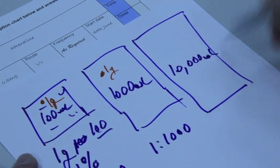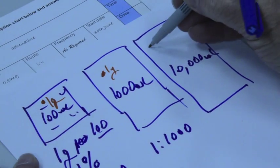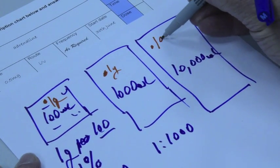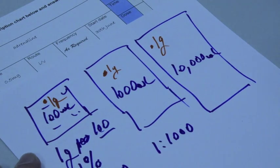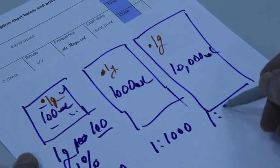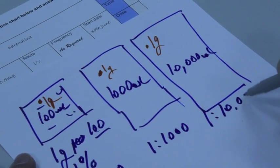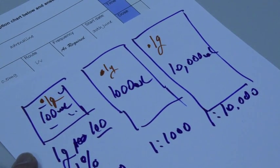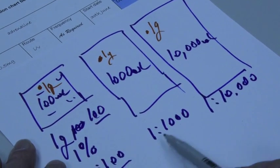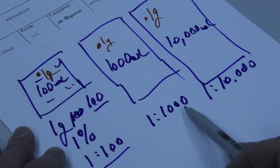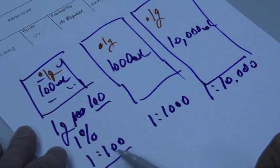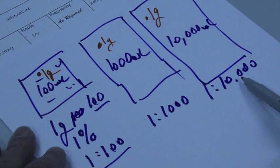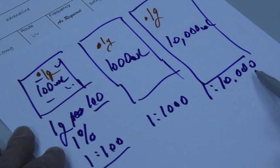You also might think that looking at these figures, our solution is getting much more dilute. That's only 1 gram in 100 and this is 1 gram in 10,000, so much more dilute.